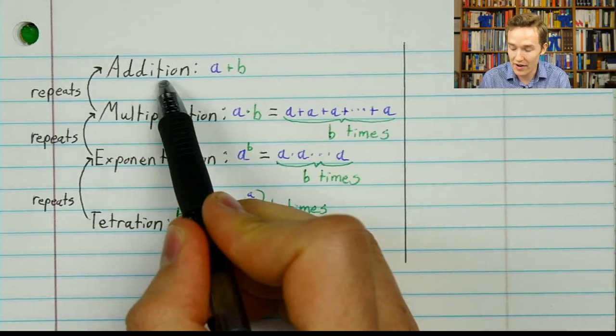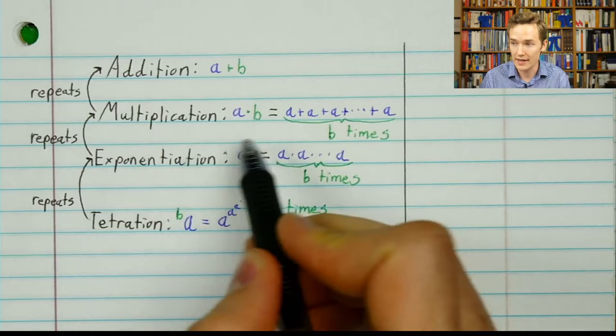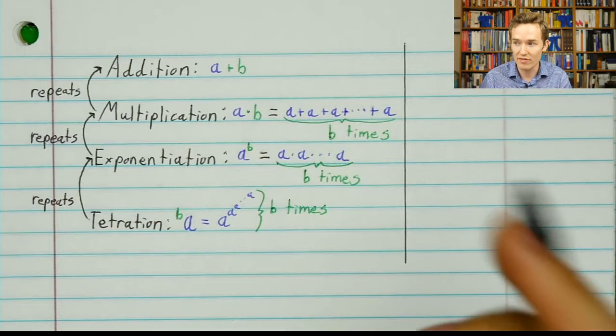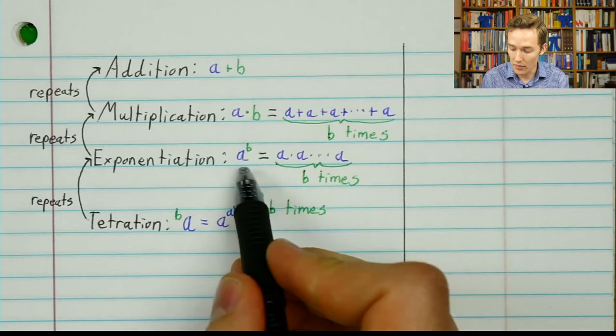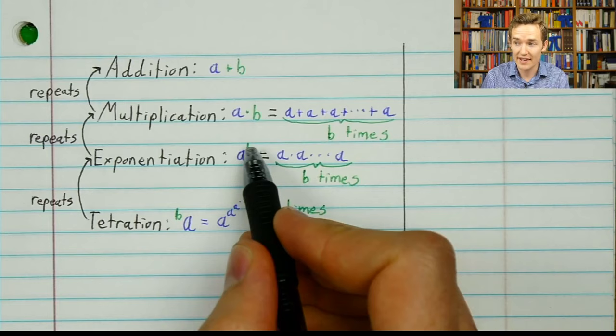So this operation is called tetration. A way you might think about it: we all learn about addition first, and multiplication, as we first see it, is repeated addition — a times b is a plus a plus a, b different times. And if you say, what happens if we repeat multiplication — taking a times a times a, b different times — we write it as a to the power b, and that's exponentiation.